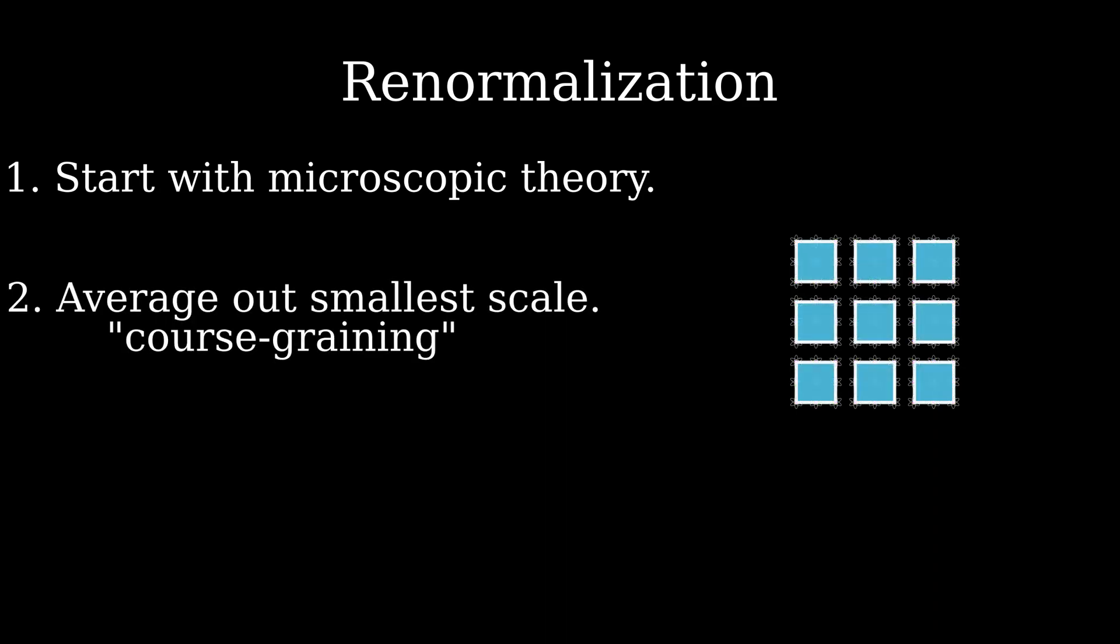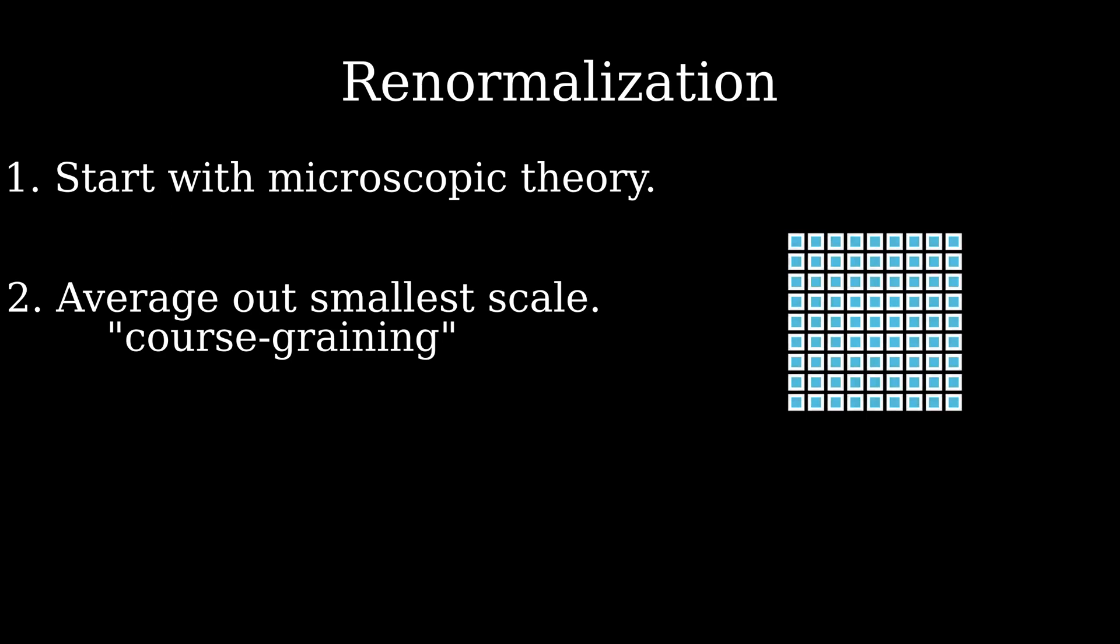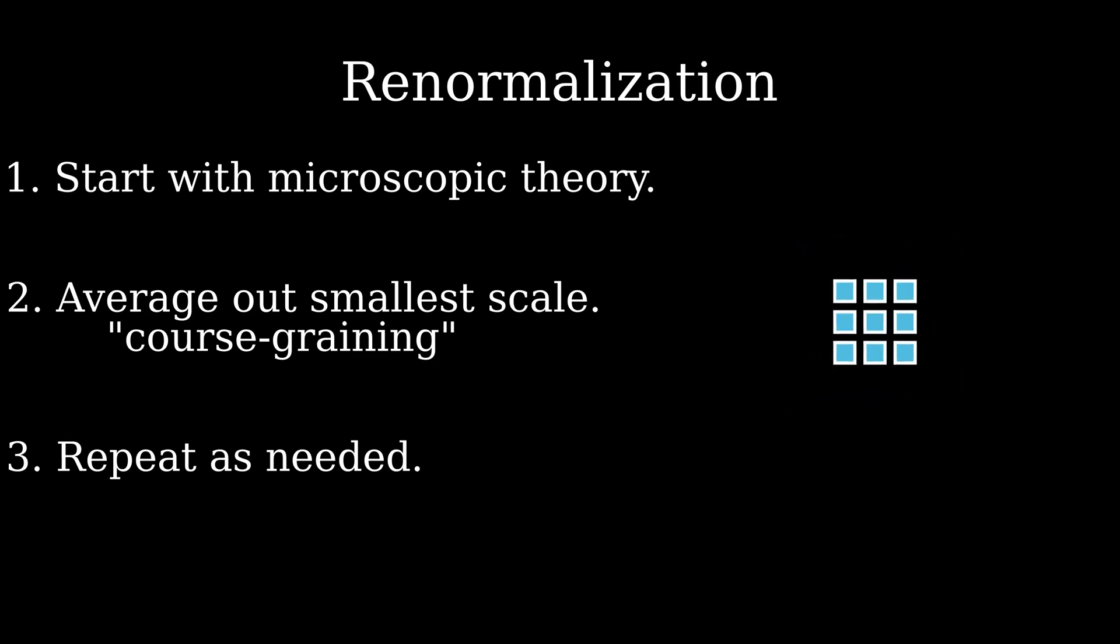Next, average out the smallest scale behavior to get a model that is valid at some intermediate scale. This is called coarse graining since we are redefining our system in terms of larger scale, coarser variables, and therefore losing information about the smaller scale. Repeat this process until we reach the scale we would like to understand.